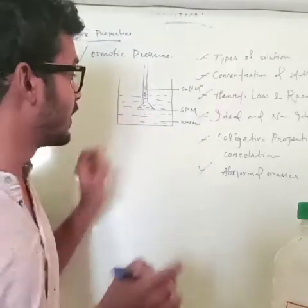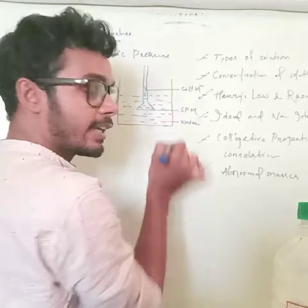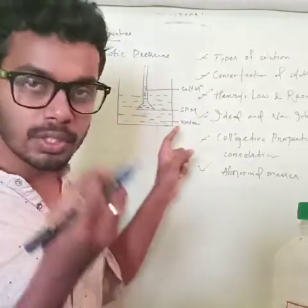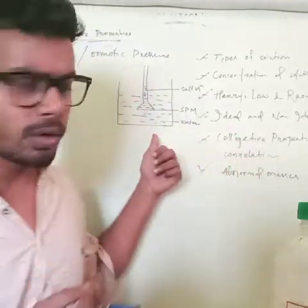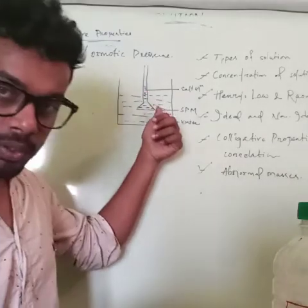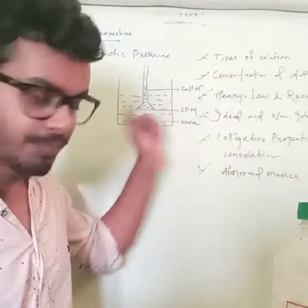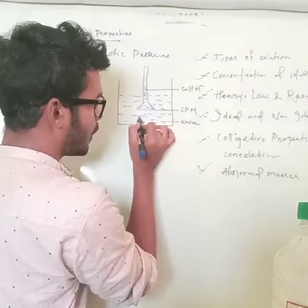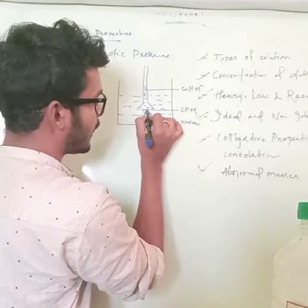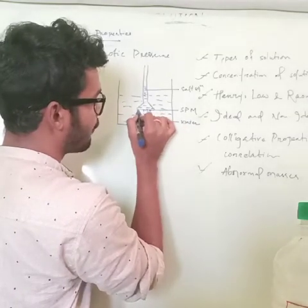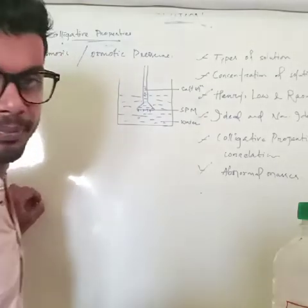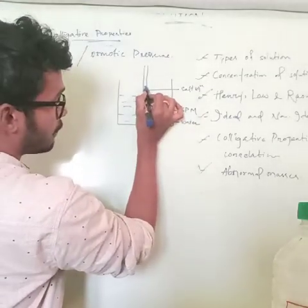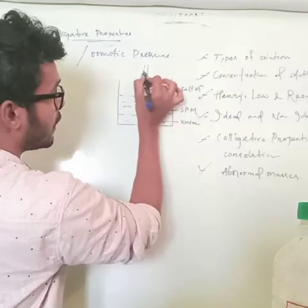The concentration of solvent molecules is more in the pure water container as compared to the solution side. So what happens? Through the semi-permeable membrane, the water molecules will flow into the solution side. After some time, the level of the solution will increase as it tries to equalize the concentration inside and outside.